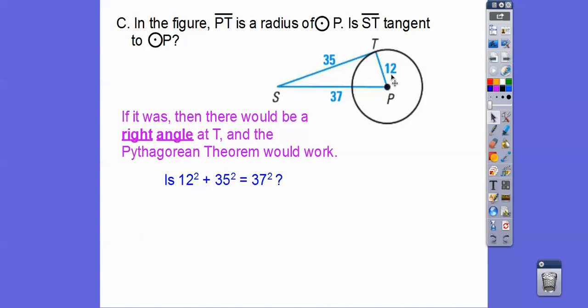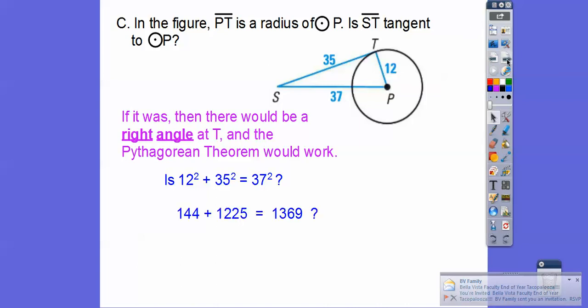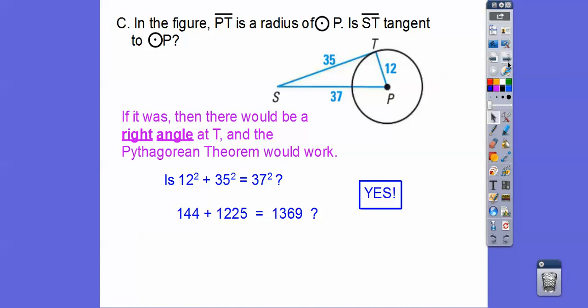So we want to check, is 12 squared plus 35 squared equal to 37 squared? So we just got to square them, add them up, and we find out, yep, it is. So that is tangent because it's a right angle, it's a right triangle, so yes, it is.